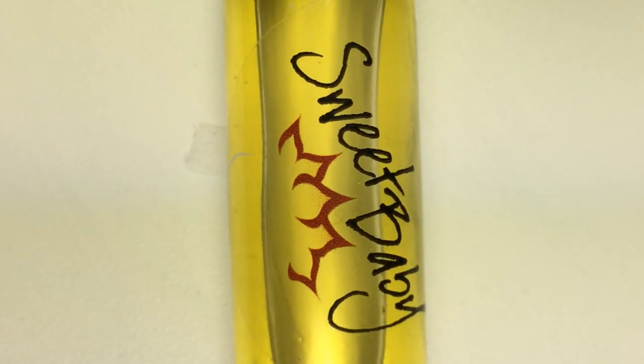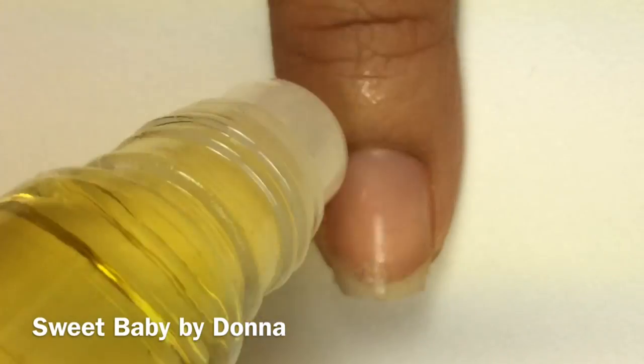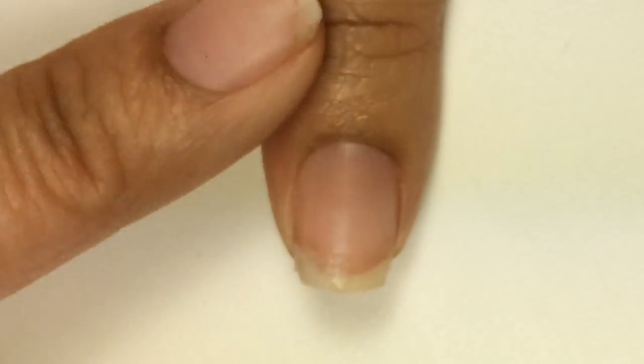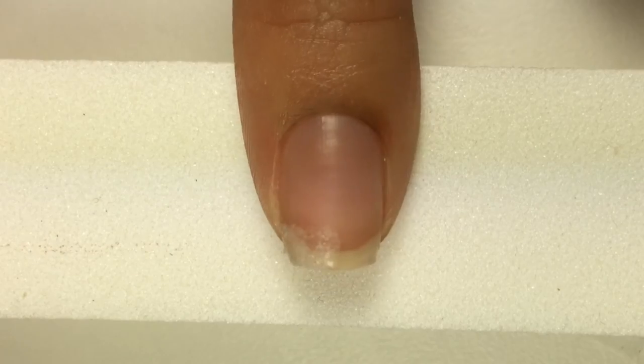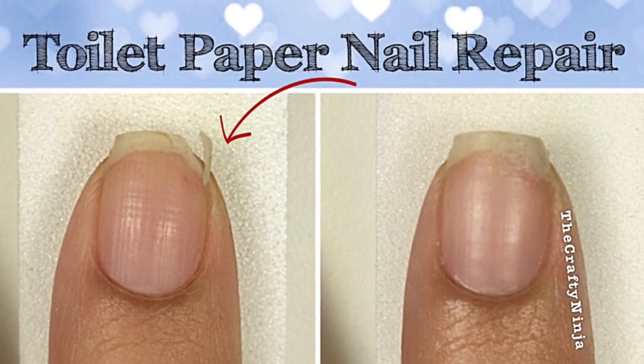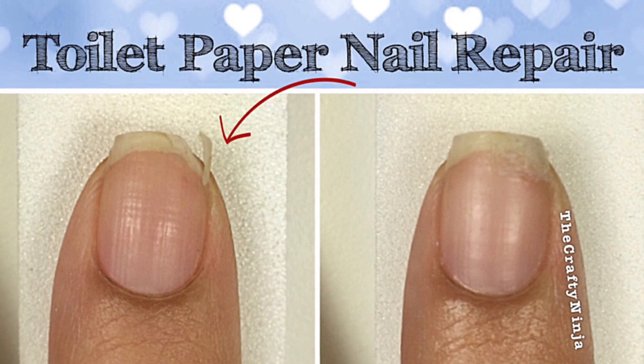With Sweet Baby by Donna, I'll apply the cuticle oil to moisturize my fingers. You're all done! Thanks so much for checking out my toilet paper nail repair. Don't forget to give this video a thumbs up and subscribe.